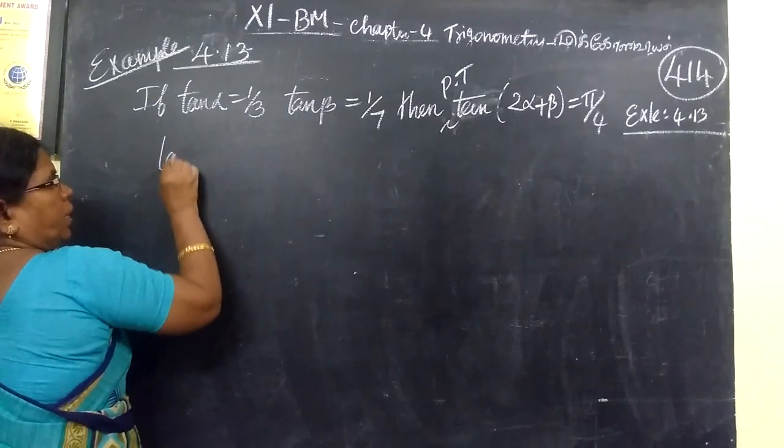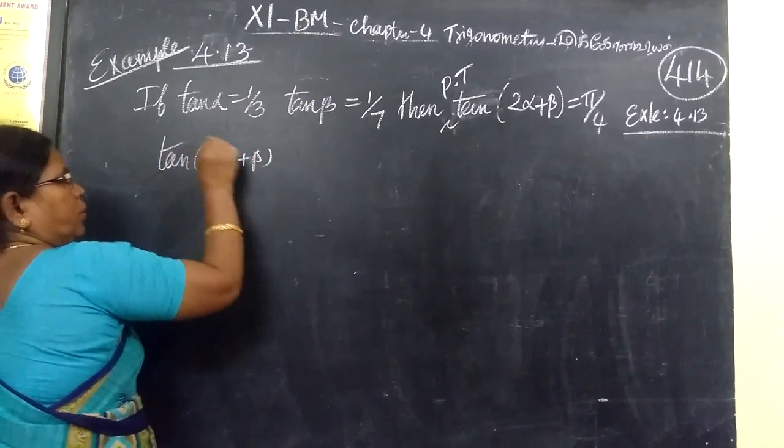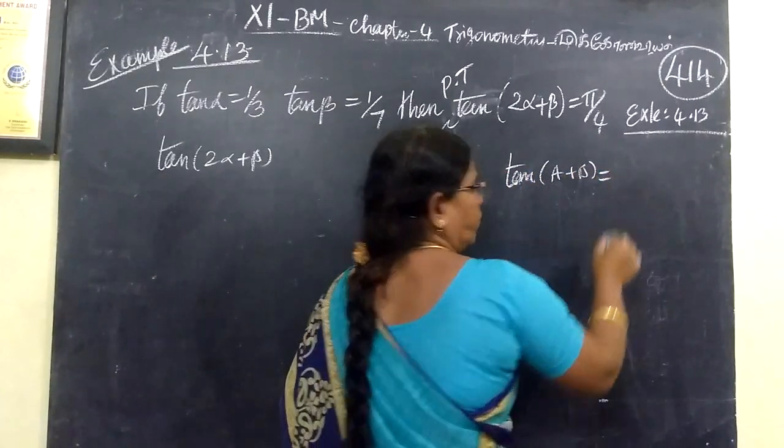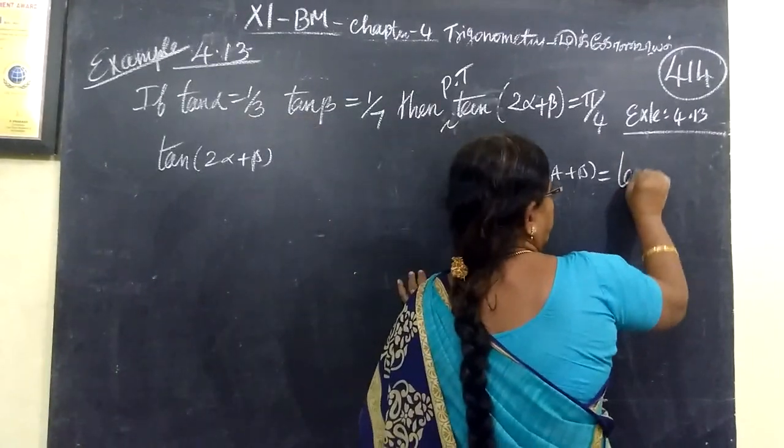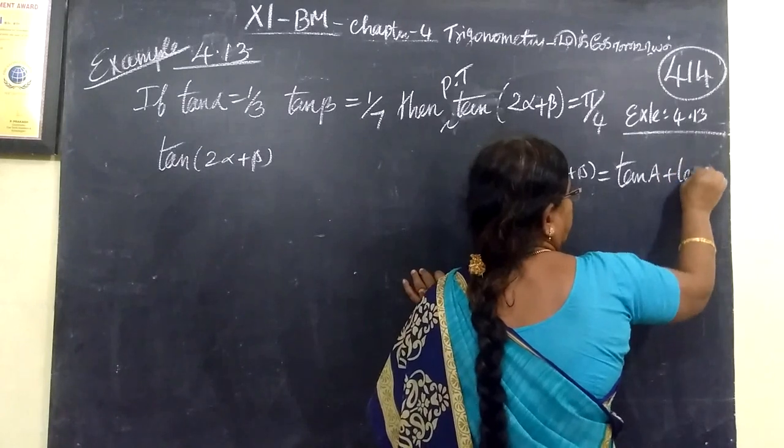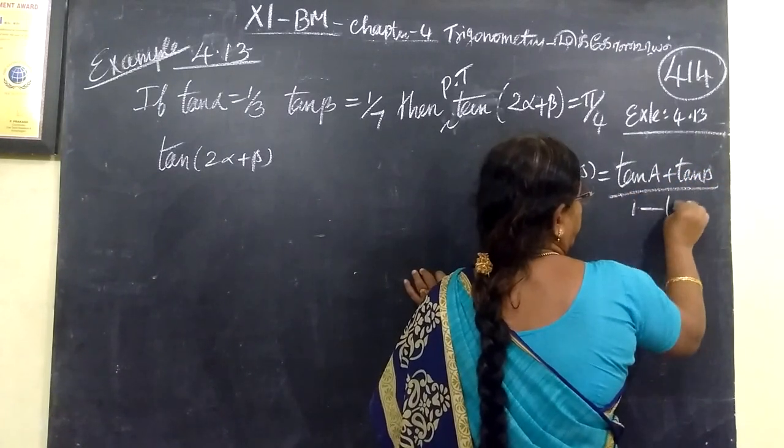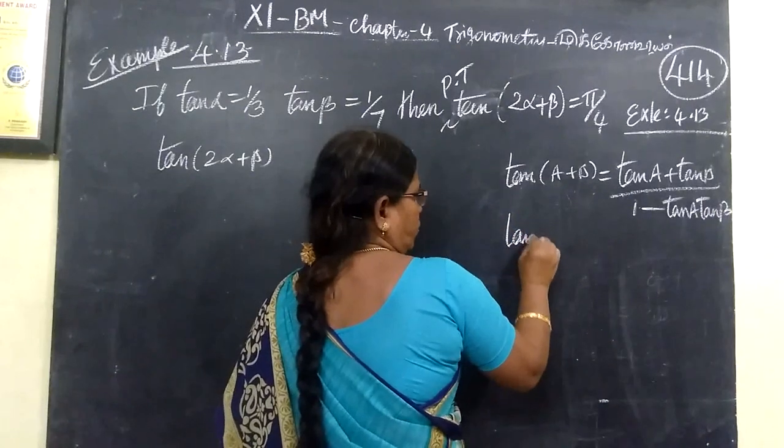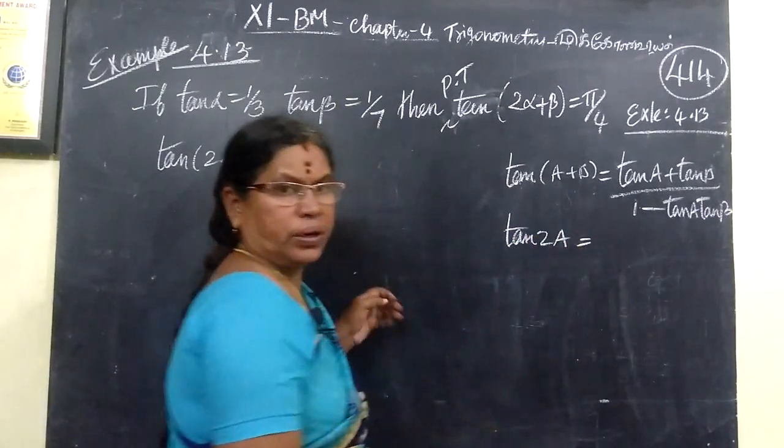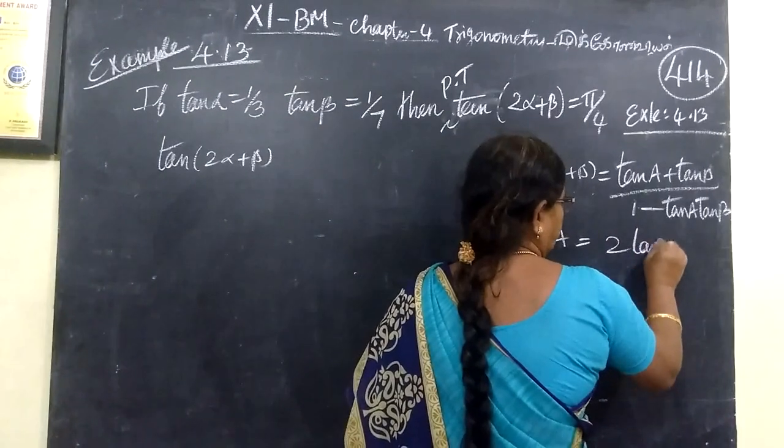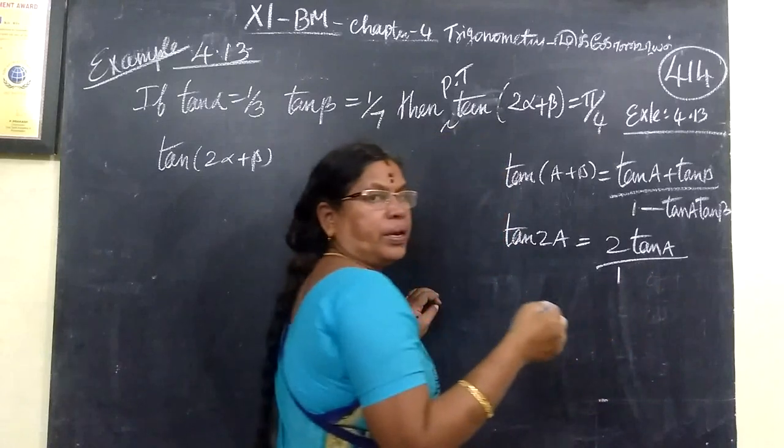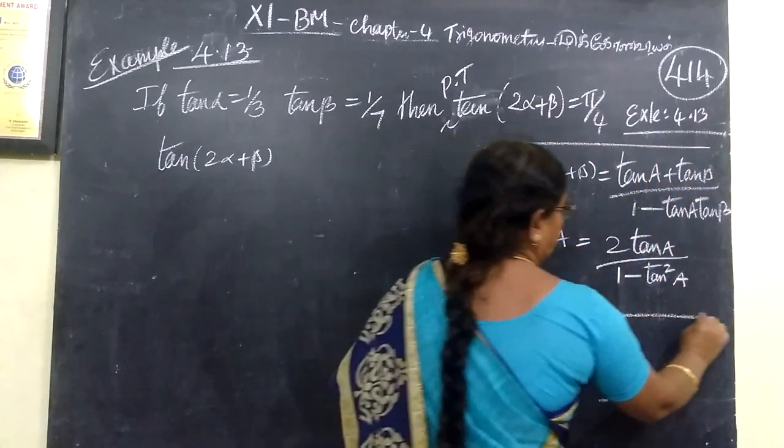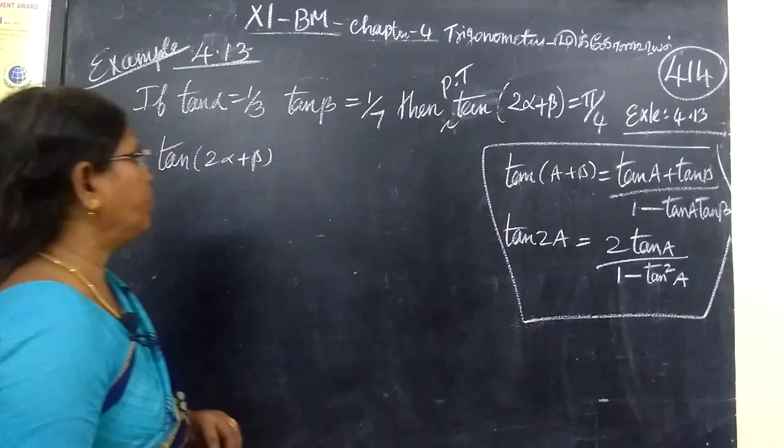Now we consider tan(2α + β). We know tan of a plus b. What is tan of a plus b? tan a plus tan b by 1 minus tan a tan b. This is the formula. Another formula we know: tan 2a equal to 2 tan a by 1 minus tan square a. So, using this formula, we are doing the problem.